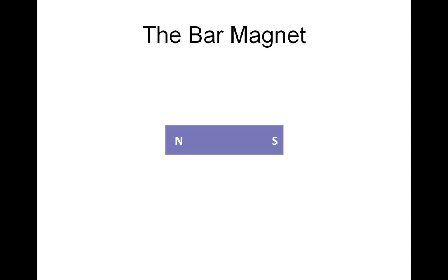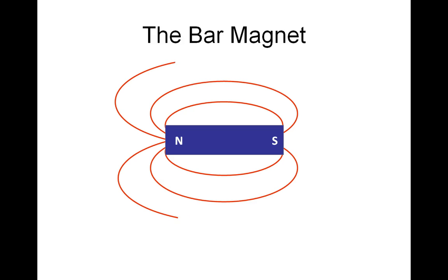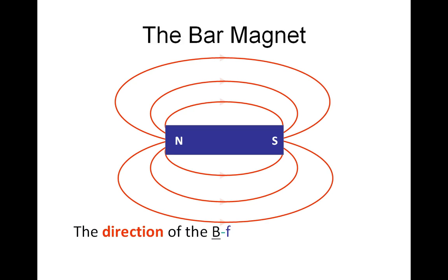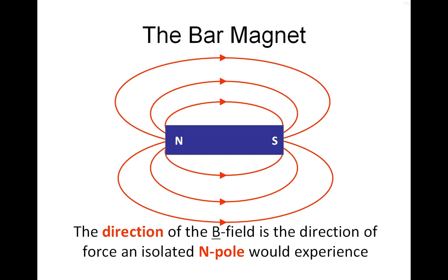We'll start by looking at the bar magnet, the field around a bar magnet. It's the usual butterfly shape, but the important thing here is the direction of the field. The direction of the B-field is always the direction of force that an isolated North Pole would feel. In other words, the field lines flow from the North Pole to the South Pole.